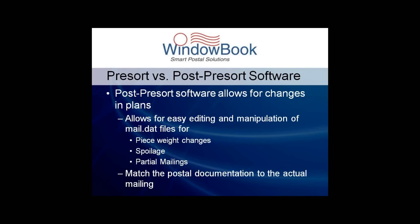Several common examples include changing the piece weights, accounting for spoilage, and creating partial mailings. Mailings are oftentimes run through the pre-sort software step days or even weeks in advance of the actual physical preparation. At the time of pre-sorting, mailers are forced to provide estimated piece weights. But when the pieces are physically prepared, these weights must be changed to be reported accurately on all your postal reports, qualification reports, postage statements, and all that required documentation for the postal service.